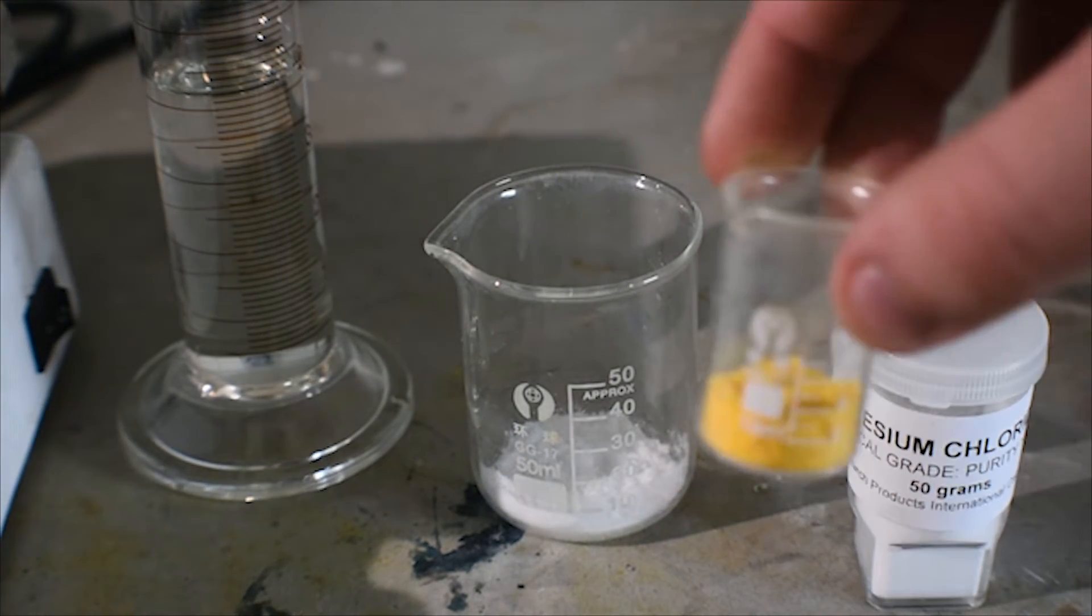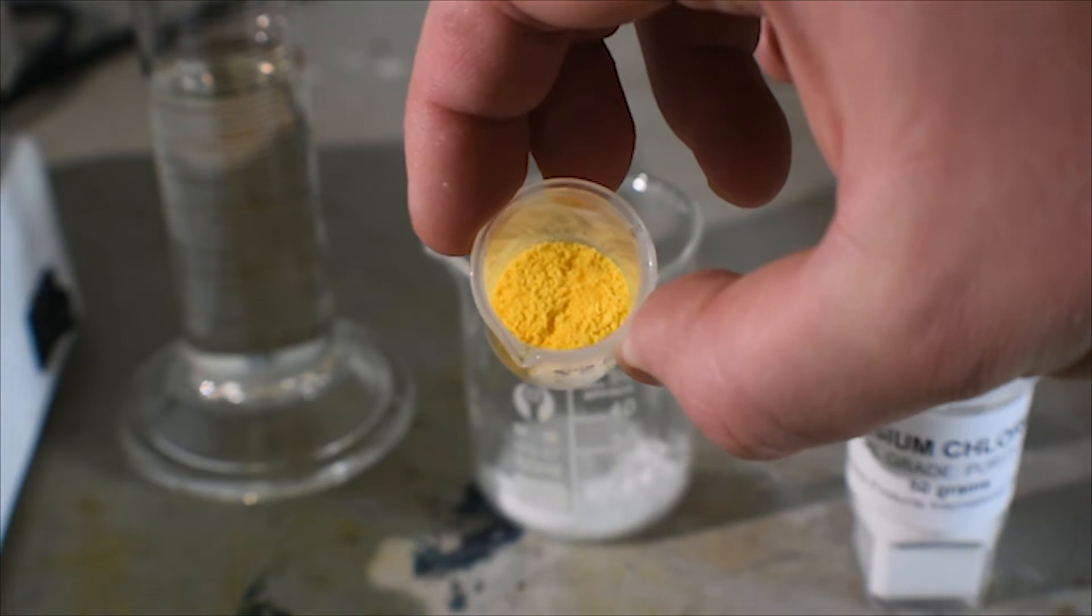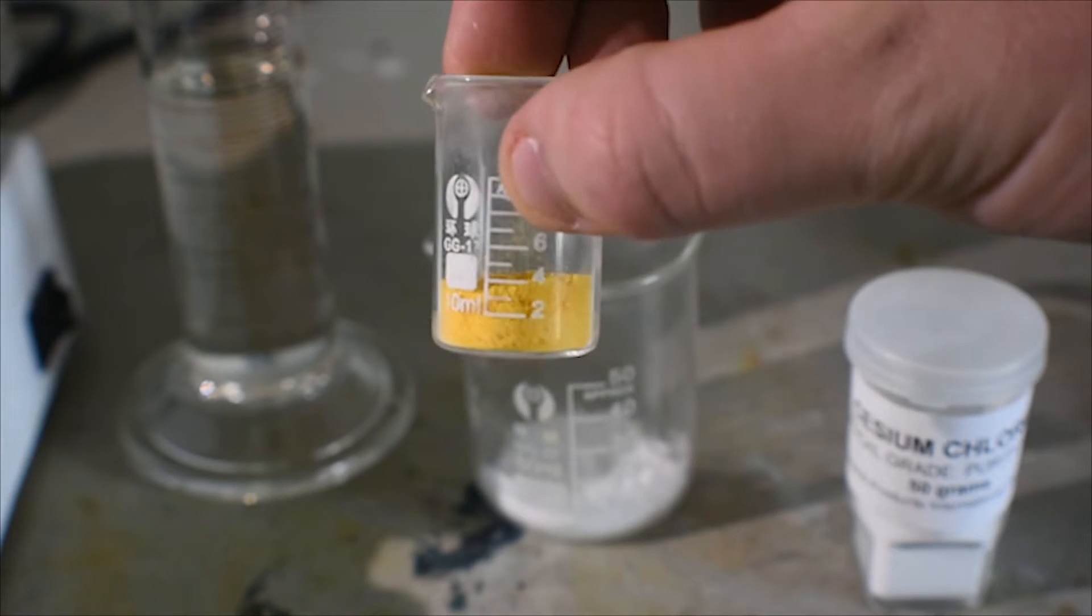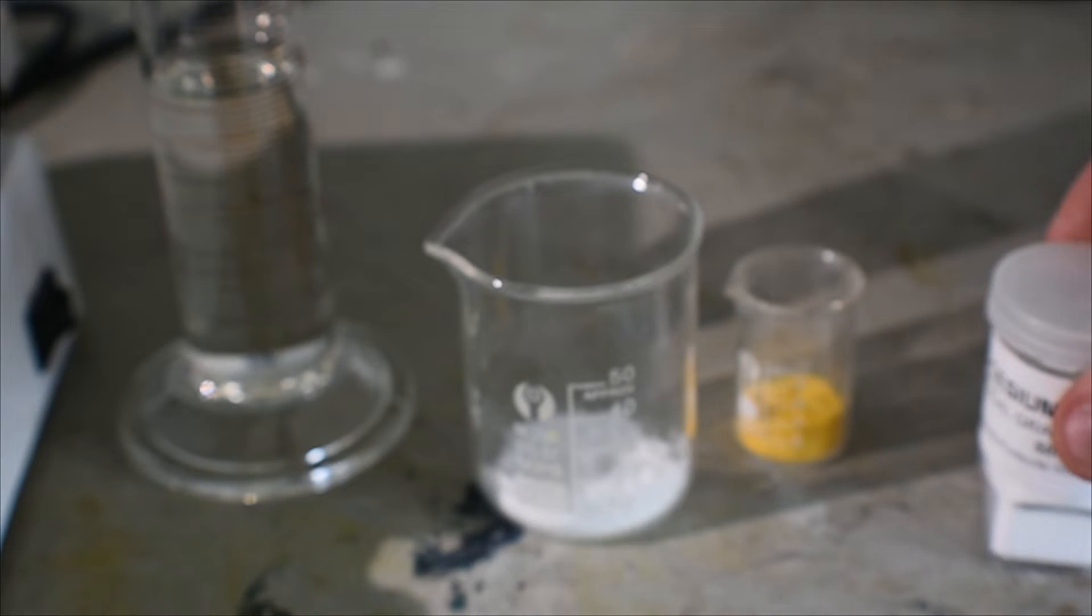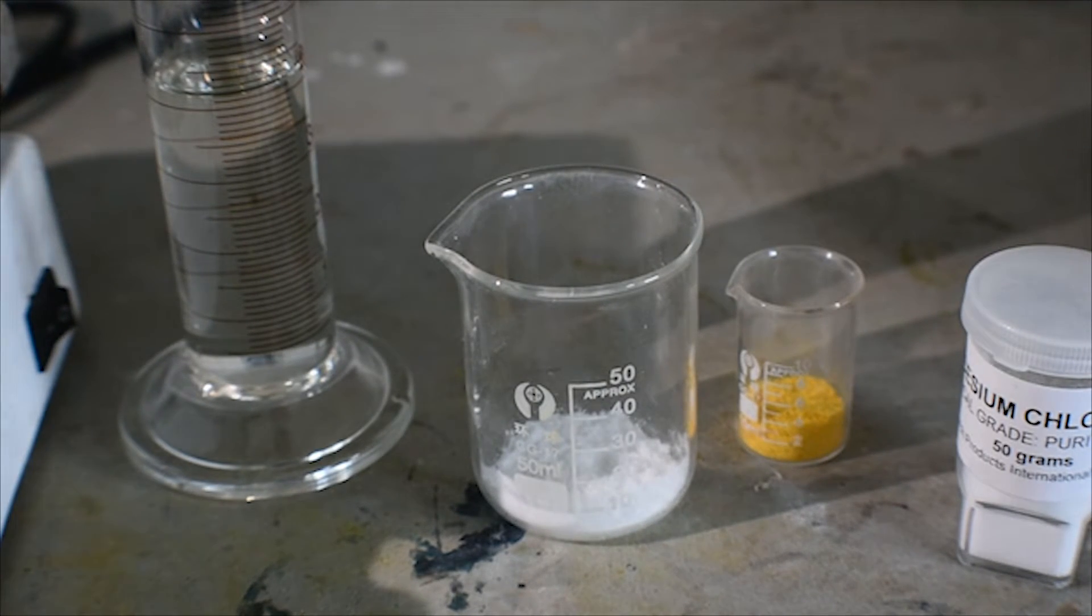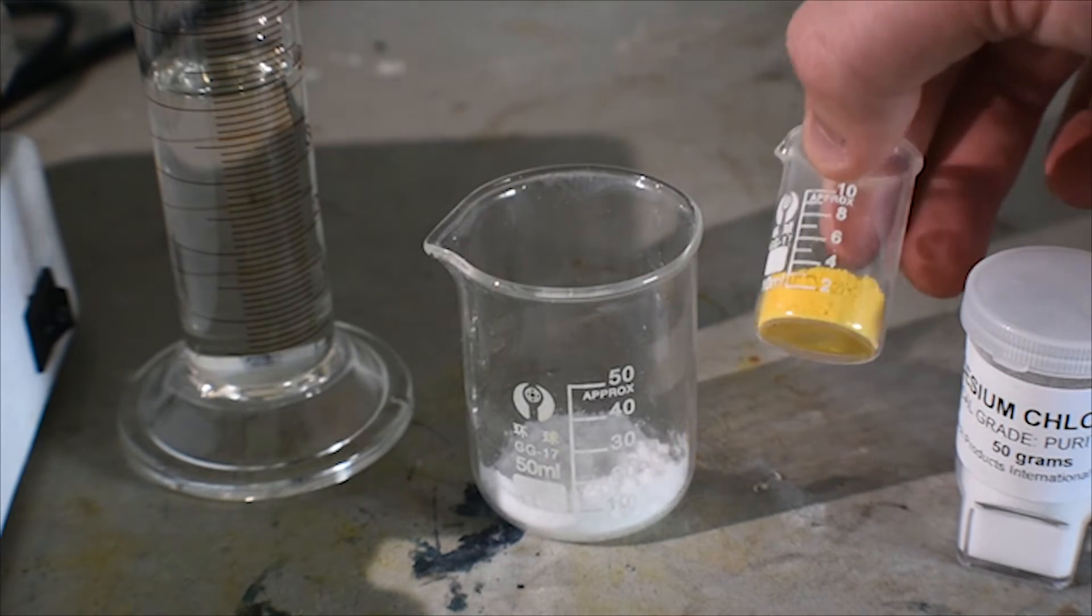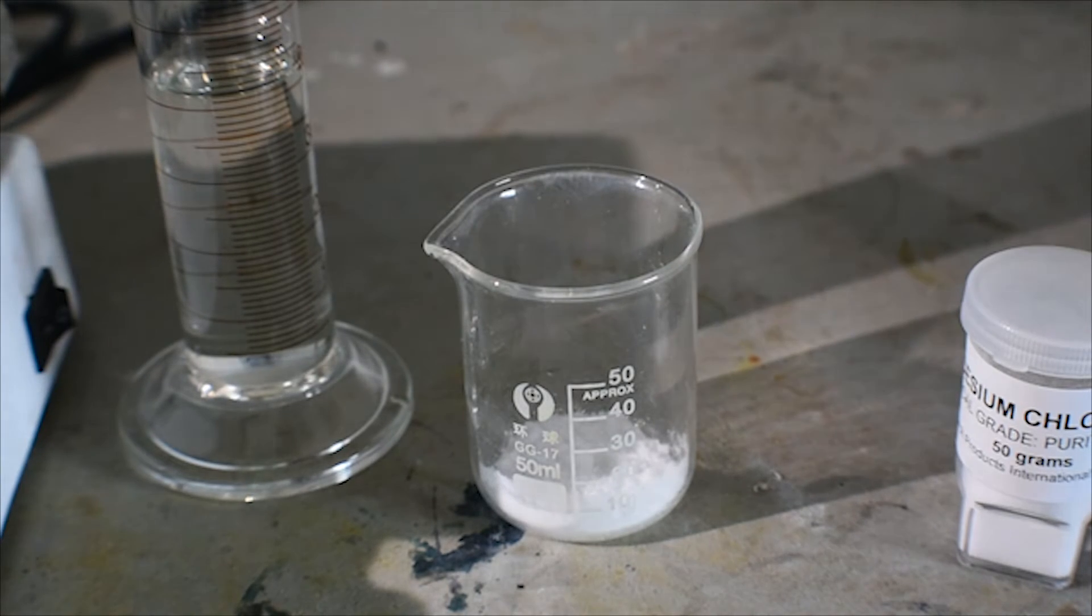Here's what the cesium salt looks like. It's a nice bright yellow powder with a nice little crystalline sort of structure to it. This is formed when cesium chloride is added to the tetrachloroiodate solution. The cesium salt is pretty insoluble and immediately precipitates out as this yellow powder. This can then be filtered and dried to obtain the powder like you see in the beaker right here.